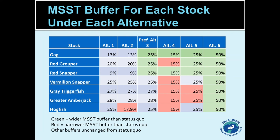Again, this applies only to these seven species out of 31 in the reef fish fishery management plan. The other species don't yet have the other status determination criteria defined. The MSST is used to determine if the stock is overfished. There's another criterion used to determine if overfishing is occurring, and another as to what proxy to use for MSY — but we're only looking at MSST here, and only for the seven stocks that currently have it defined.